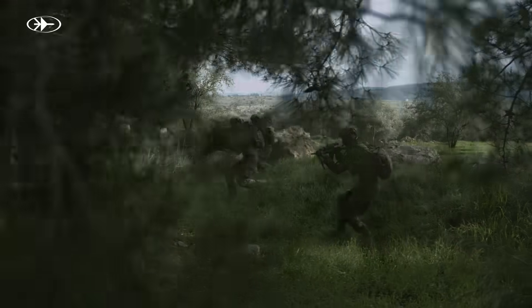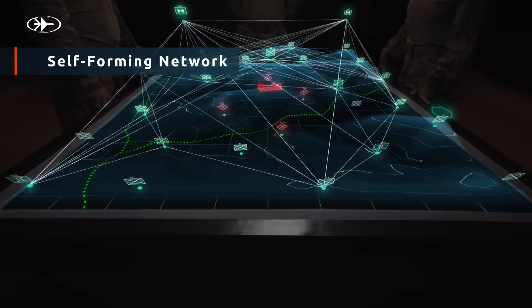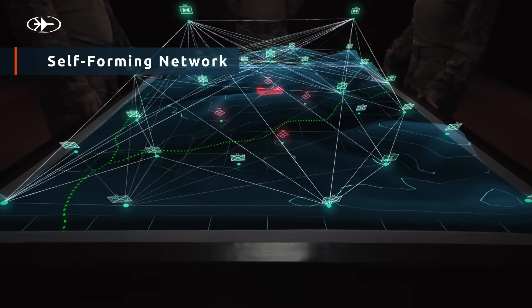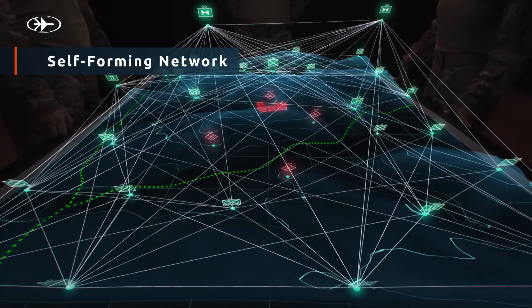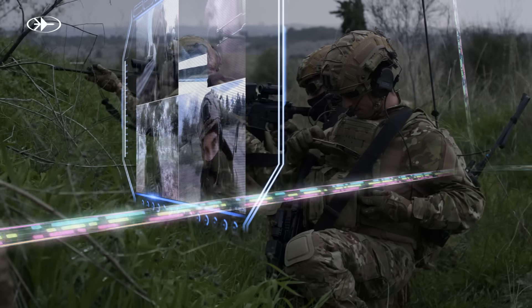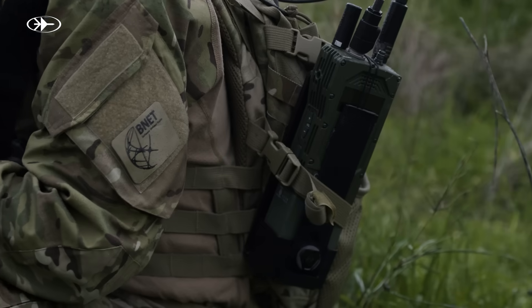With B-Net, all units are part of a self-forming network, and when in range, automatically added to the network hierarchy, eliminating miscommunication between friendly units. All units, glad to see you in the mission. Let's finish this together.